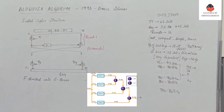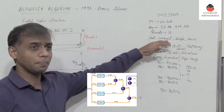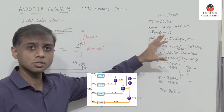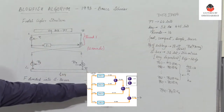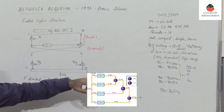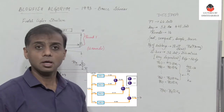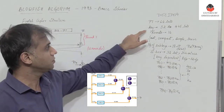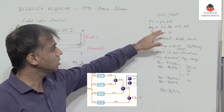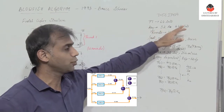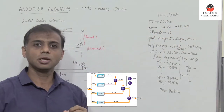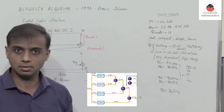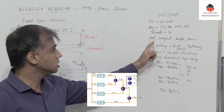This algorithm is much faster, compact, and pretty simple because it works on the fundamental principles of XOR and addition modulo 2, and it is secure. The reason why it is much more secure is because of its variable key length — the key length can be varied from 32 bits to 448 bits.